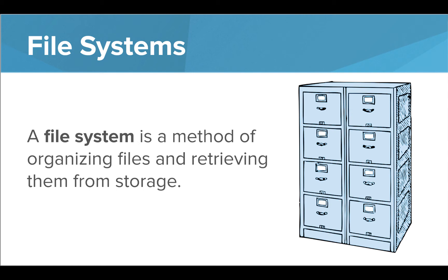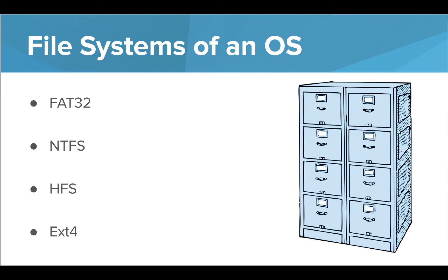All operating systems have and use different types of file systems. A file system is the method in which your files are stored. Organizing files is important so that they can easily be retrieved when you need them. Each operating system has its own preferred file system. These are the top four file systems used today.